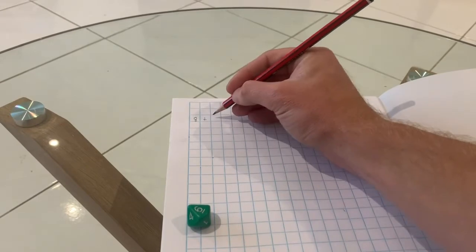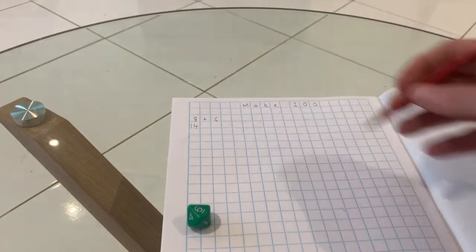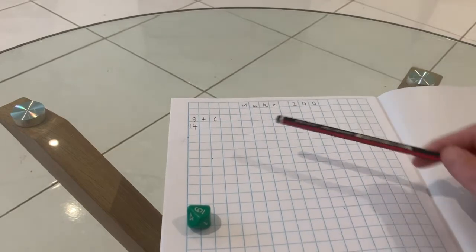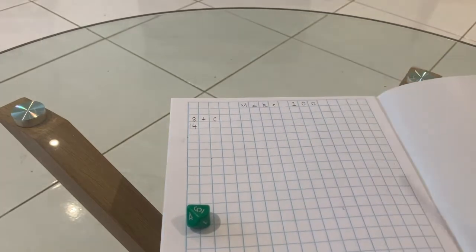And my next is 6, which makes 14. So I use that bridging to 10 strategy from before. I did 2 more makes 10 and then there's 4 left to make 14.